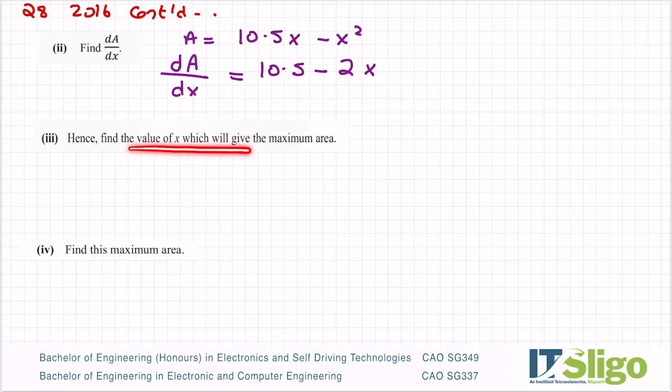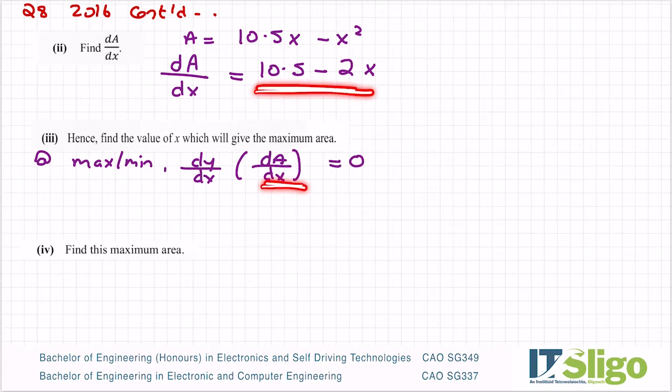Hence find the value of a which will give the maximum area. That's super important. That word, it's a key word in calculus. So the theory at a max or a min point, or at max min, dy/dx, which is da/dx for this question, is equal to zero. So what does that mean? Well, it means take your da/dx, which we just found, let it equal to zero, and solve it for x. And that will give you the value of x that will give you the maximum area.